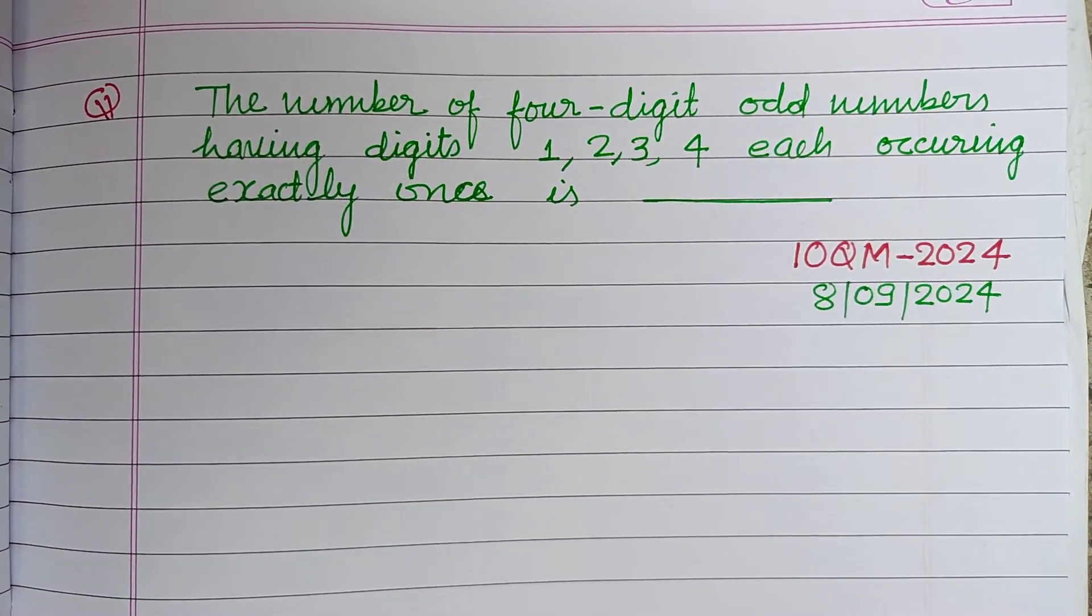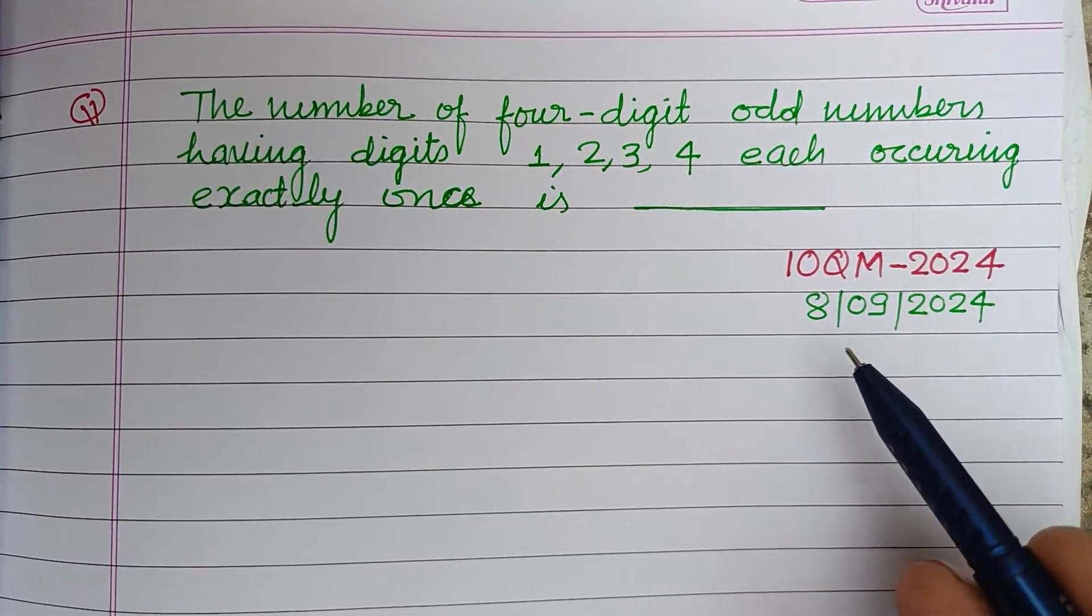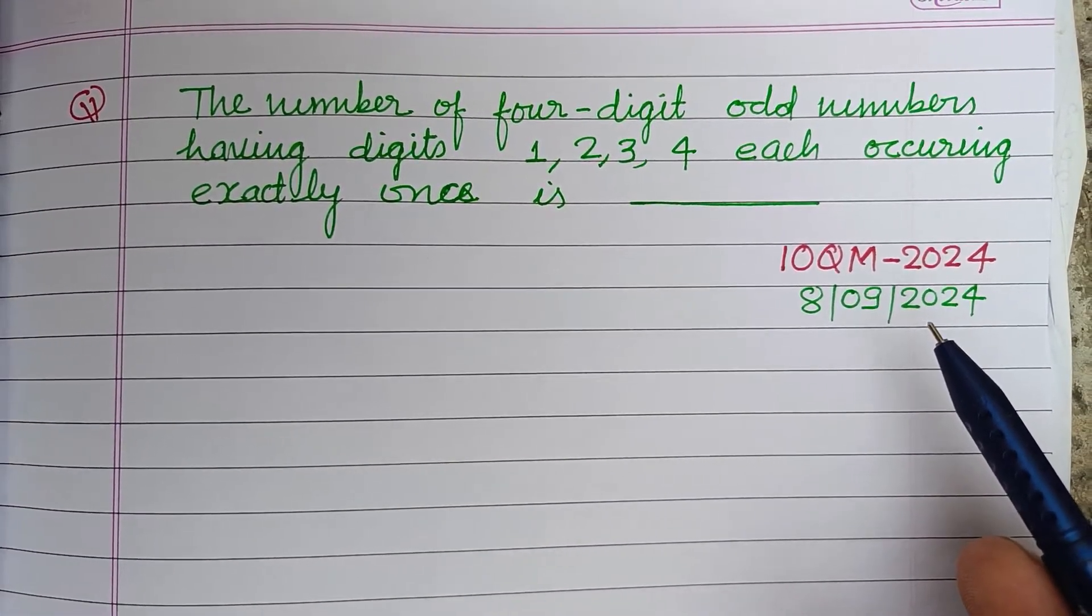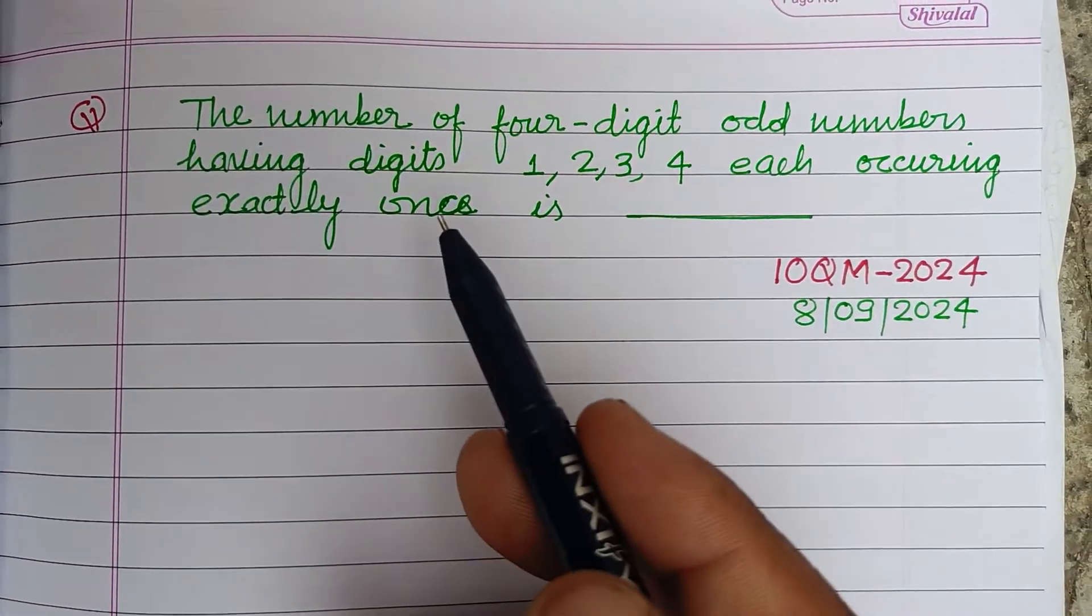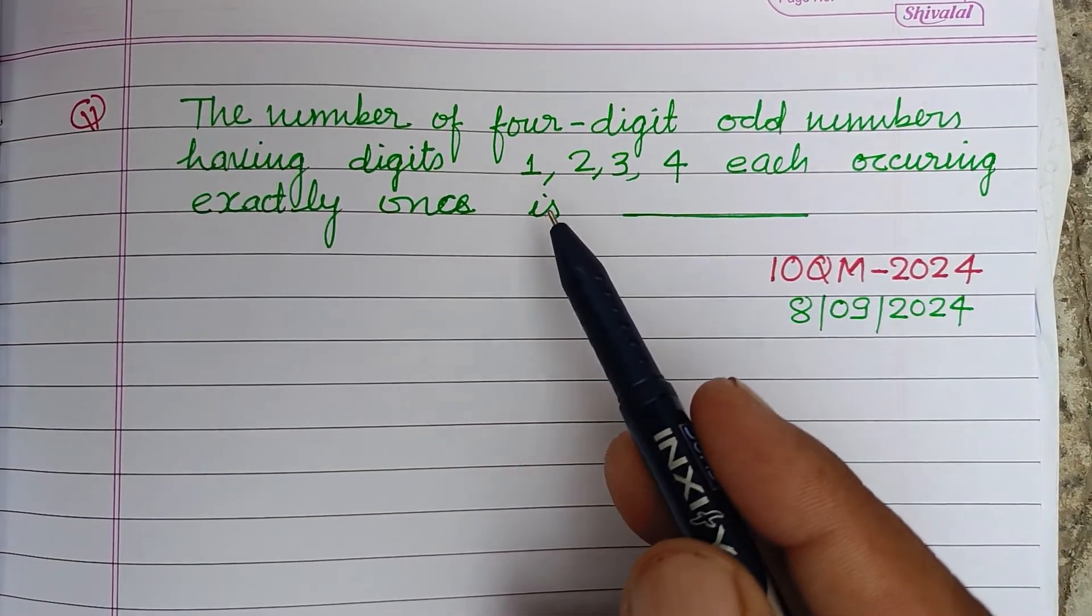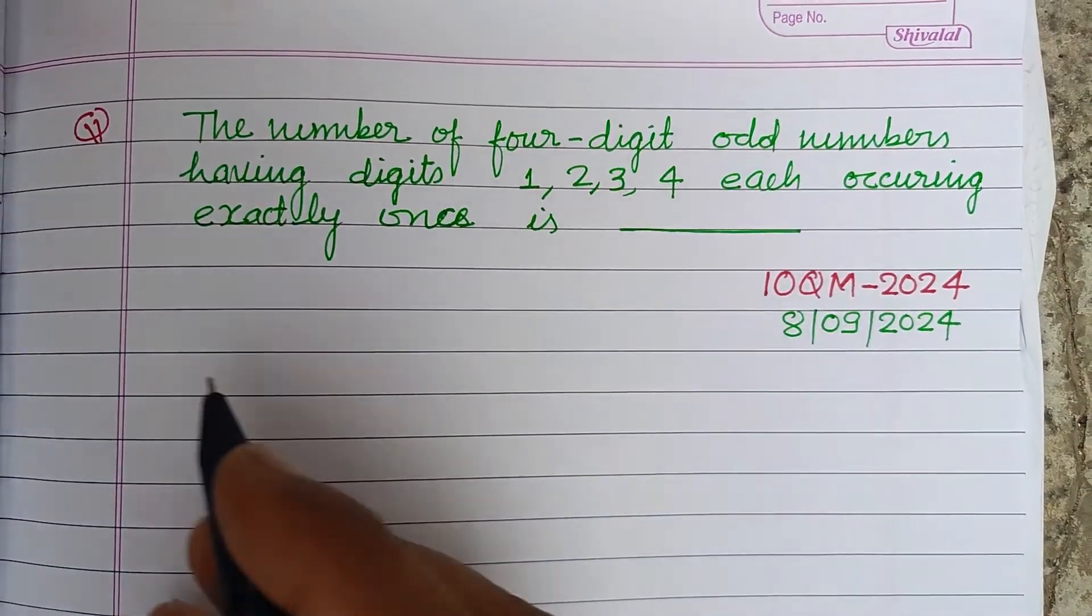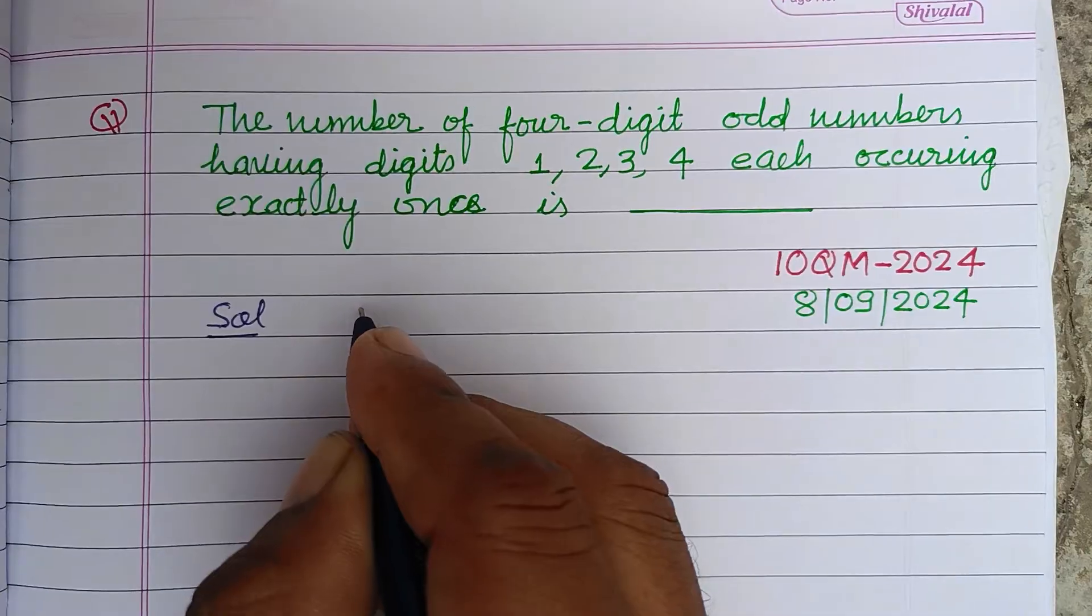Hello viewers, warm welcome to this YouTube channel. This is a question from ICQM 2024 held on 8 September 2024. The number of four-digit odd numbers having digits 1, 2, 3, 4 each occurring exactly once is...